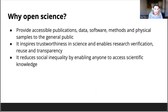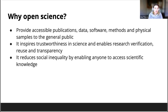First, why open science — why openness? Open science emerged to provide accessible publications, data, software, methods, and physical samples to the general public. It inspires trustworthiness in science because it enables research verification, transparency, and reuse. It also has a major social role because it reduces social inequality by enabling anyone with internet access to access scientific knowledge.